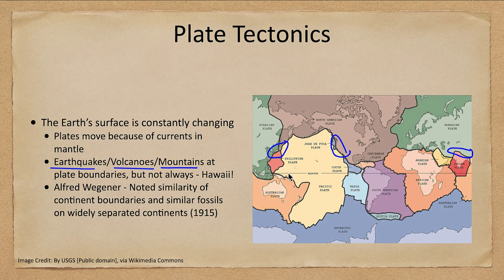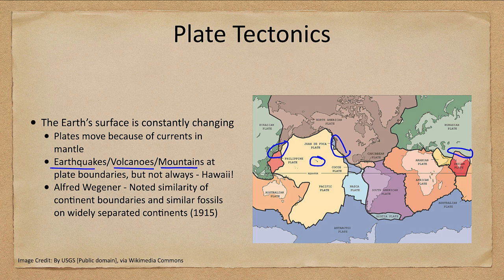However, this is not always the case. Here's Hawaii in the middle of the Pacific plate, not anywhere near the edge of a plate, but it is still volcanic. That is a weak spot in the crust that forms the Hawaiian volcanoes. Typically, if you live toward the middle of a plate, you would not expect to have many strong earthquakes or volcanic activity.